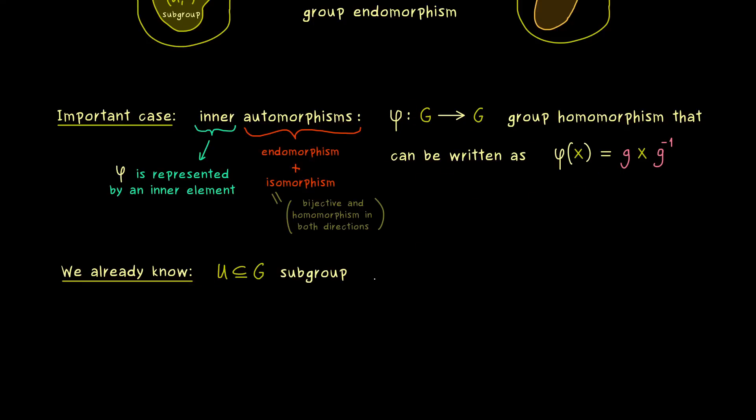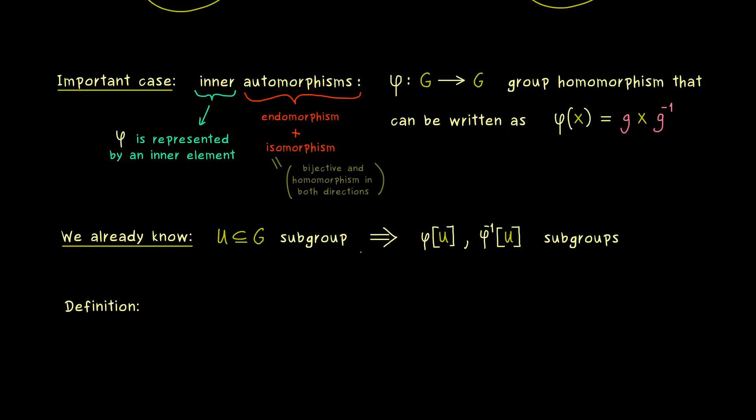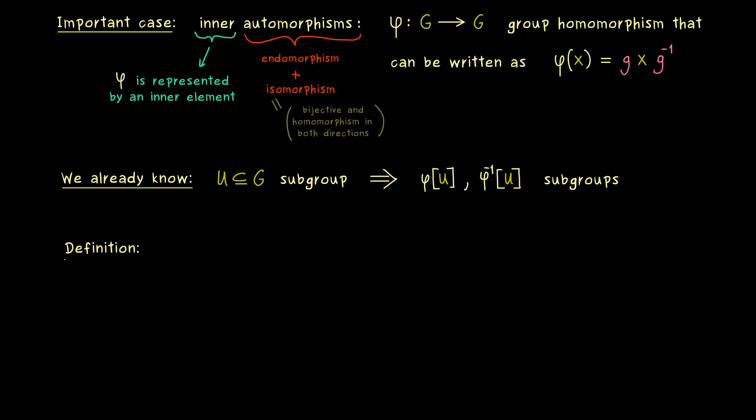So for example, we already know, that if we have a subgroup U in G, then we can form the preimage and the image of U under φ. And now both things are definitely subgroups in G again. And now by using the definition of φ, we see that these subgroups are related to our original subgroup U by using the element g. And exactly this relation we can have for subgroups leads to the following definition.